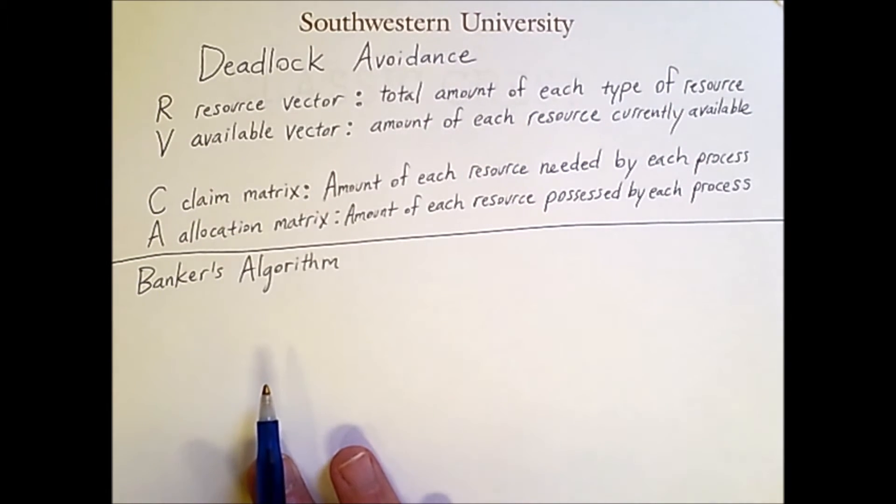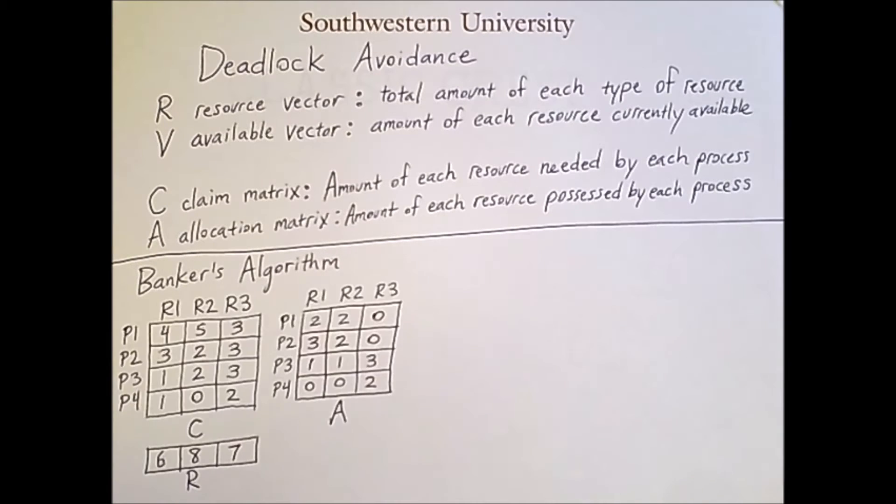I've written out the state of a system in the middle of execution. So we have three types of resources in this system. This is the resource vector R, and these could be things like units of memory, file handles, interrupt channels, semaphore value. The point is, we have three types, and for resource type 1, we have 6 units overall, 8 units of resource type 2, and 7 units of resource type 3.